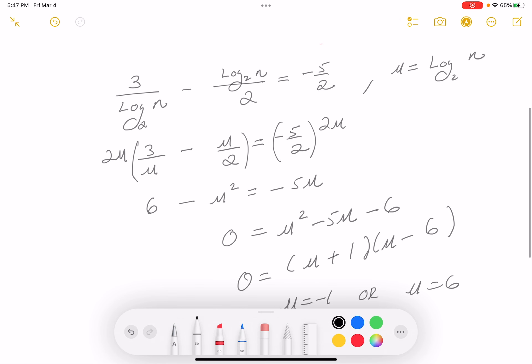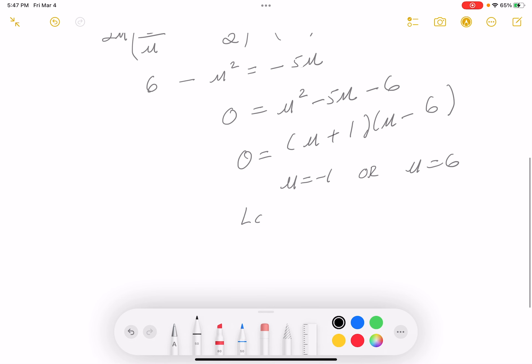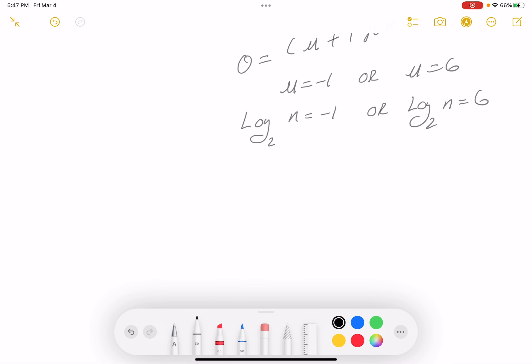Let's not celebrate too quickly. What's u? It's log base 2 of n. So this is log base 2 of n equals minus 1 or log base 2 of n equals 6. Well, logs are hard to look at, so I'm going to write it as an exponential. So n will equal 2 to the minus 1 or n would equal 2 to the 6th power. What does that give you? n equals 1 half or n is equal to, let's see, 2 to the 6th. 2 times 2 is 4, 8, 16, 32, 64. Got two answers now.